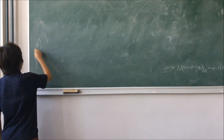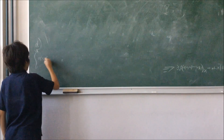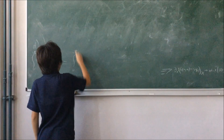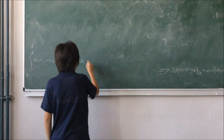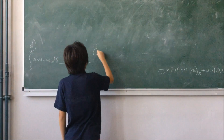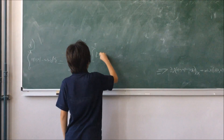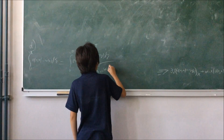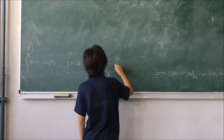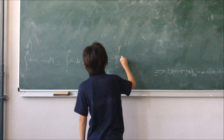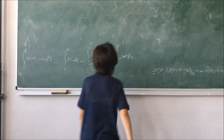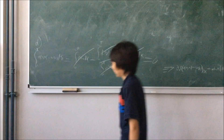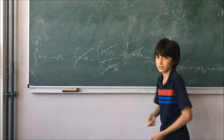Now, the integral from zero to two pi of u of x, t minus v of x dx is equal to the integral... these terms cancel, and then these cancel, this is zero, which means that this integral is equal to zero. And using part C, we're done.